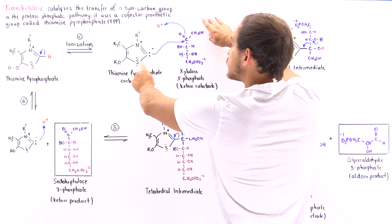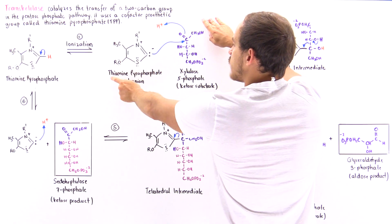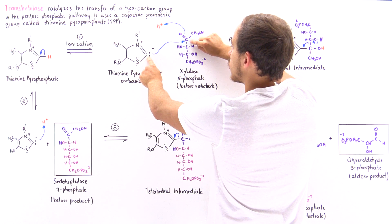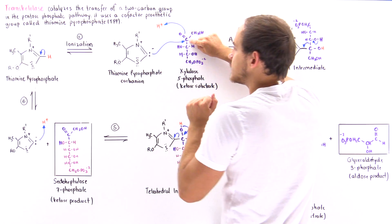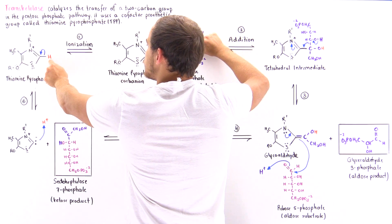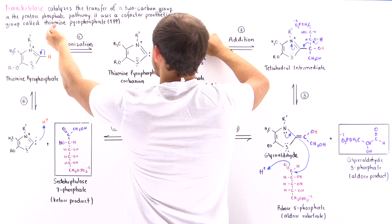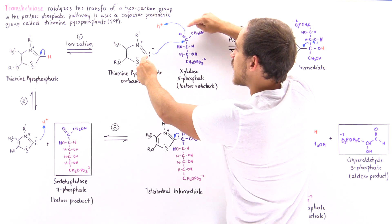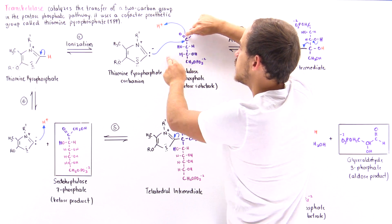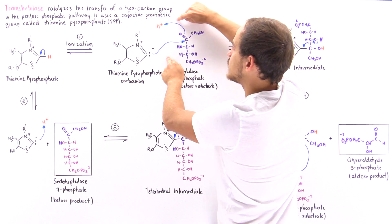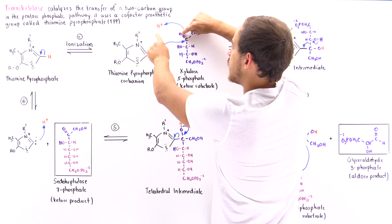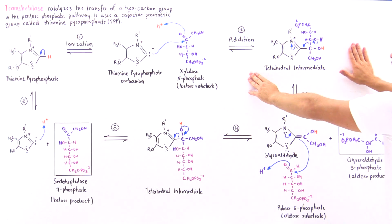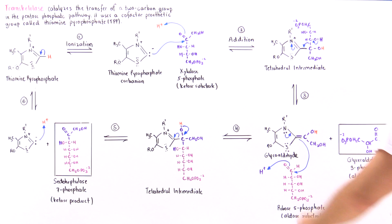This is the thiazol ring of the thiamine pyrophosphate, and a bond is formed between this carbon and that carbon. At the same time, the H ion that departed is picked up by the oxygen — the pi bond is broken, a sigma bond forms between the oxygen and the H atom, and we form a tetrahedral intermediate molecule.